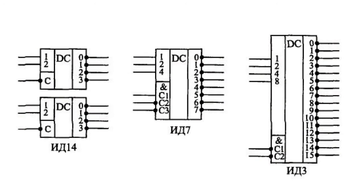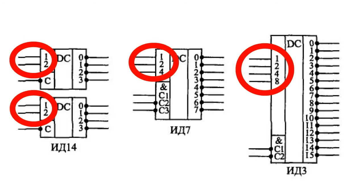Inputs to which an input code goes are often called address inputs. They are marked as 1, 2, 4, and 8, with a figure standing for the binary code's digit capacity. The code on inputs 1, 2, 4, and 8 determines the number of an active output.